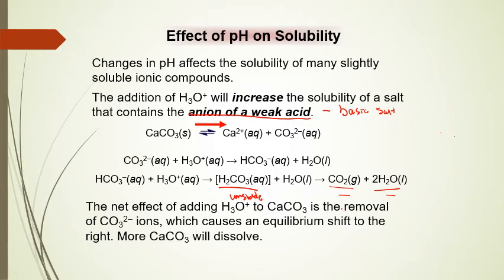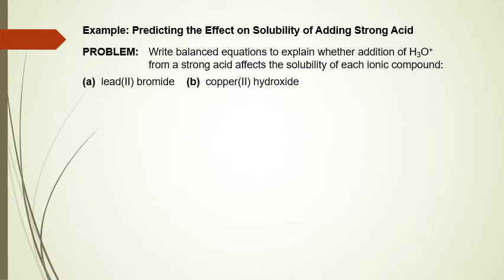The addition of acid increases the solubility of the salt in these situations. We'll now look at an example predicting the effect of solubility when adding a strong acid. We'll write balanced equations to explain whether the addition of H3O⁺ affects the solubility of each ionic compound, getting back into the salt hydrolysis concept to see if additional reactions take place.